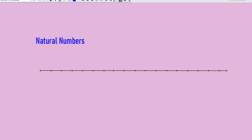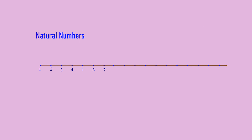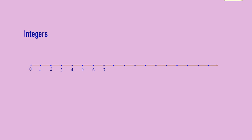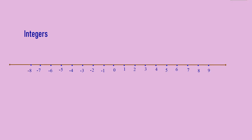You know how to represent natural numbers on a number line. You begin with 1 and extend the other numbers on the right side of 1. For whole numbers, just begin with 0 and extend the other numbers on the right side of 0. For integers, to the left of 0 we write negative integers and to the right of 0 we write positive integers, and the line extends in both directions indefinitely.